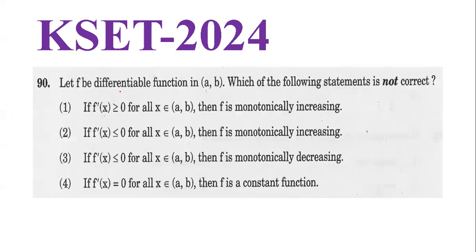Next question, also KSET 2024: Let f be a differentiable function on the open interval (a, b). Which of the following statements is NOT correct? Option A: if f'(x) ≥ 0 for all x in (a, b), then f is monotonically increasing. Option B: if f'(x) ≤ 0 for all x in (a, b), then f is monotonically increasing.